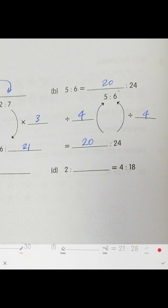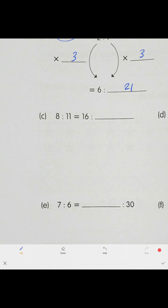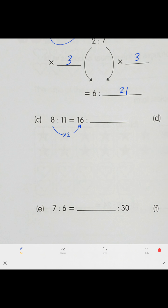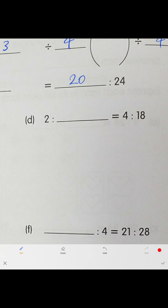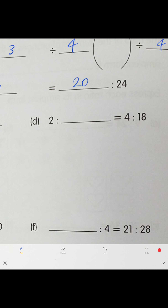Next one: 8 to 16, and we need to find the missing number. You multiply by 2, so that gives us 22.